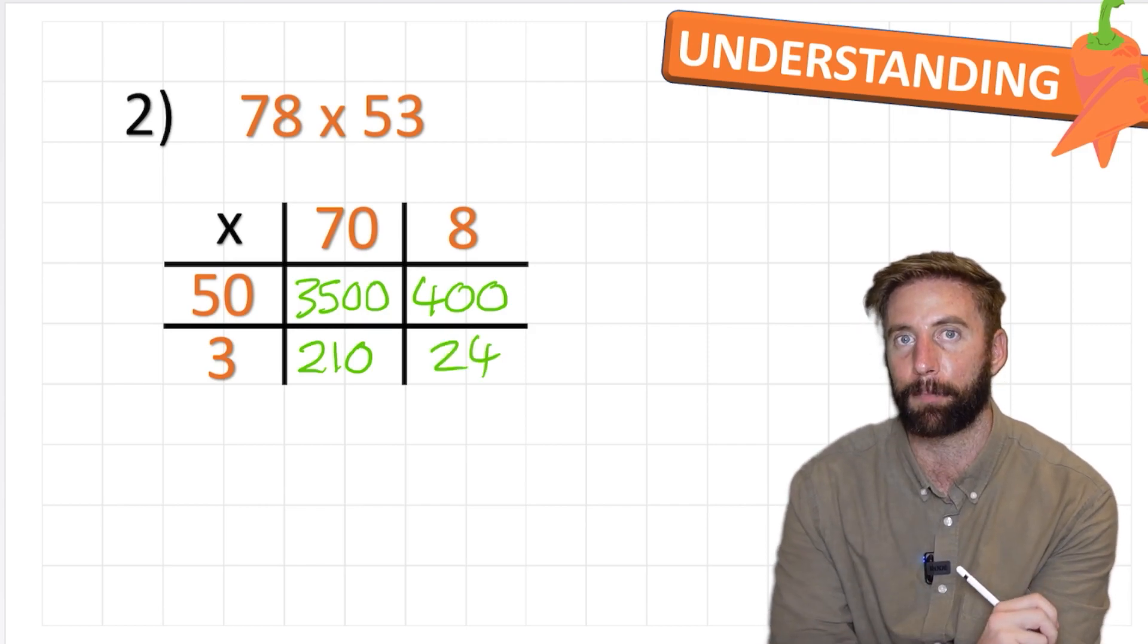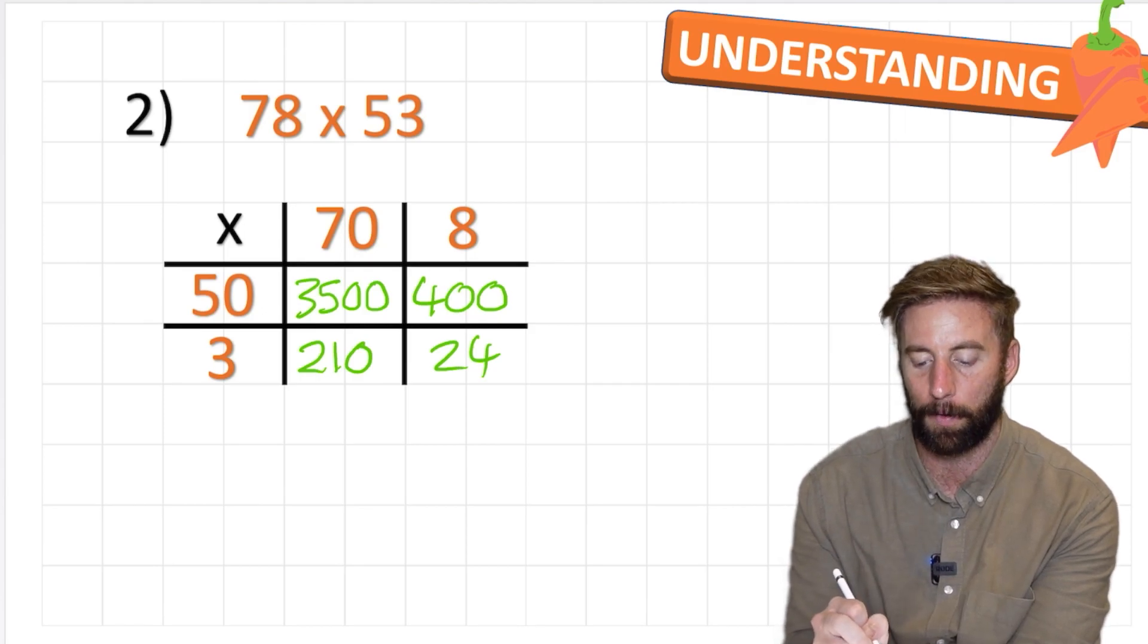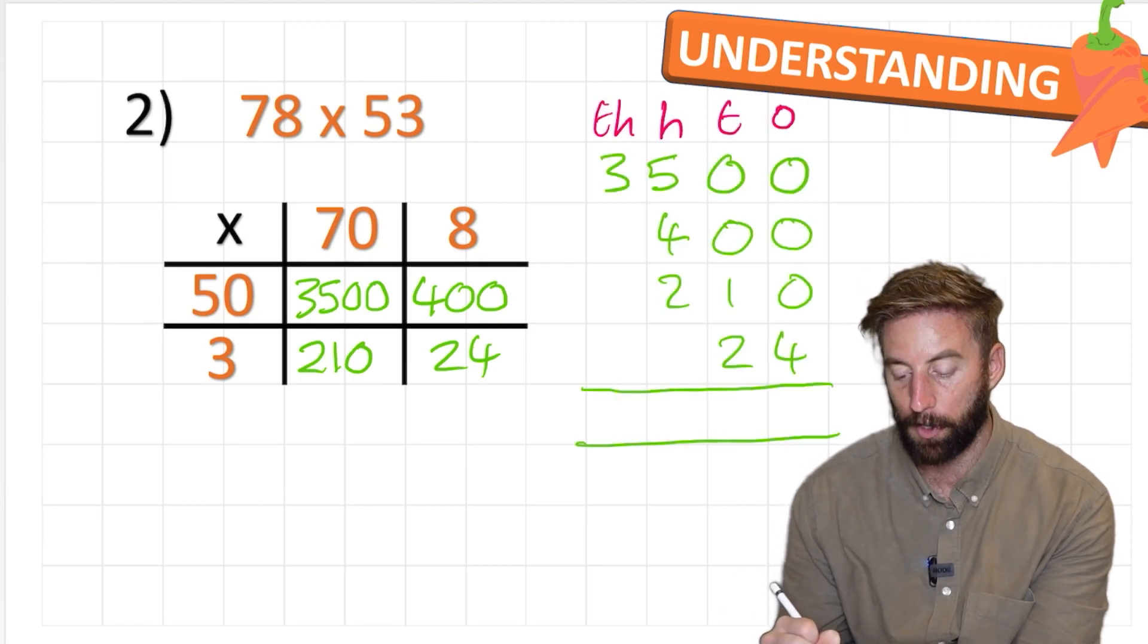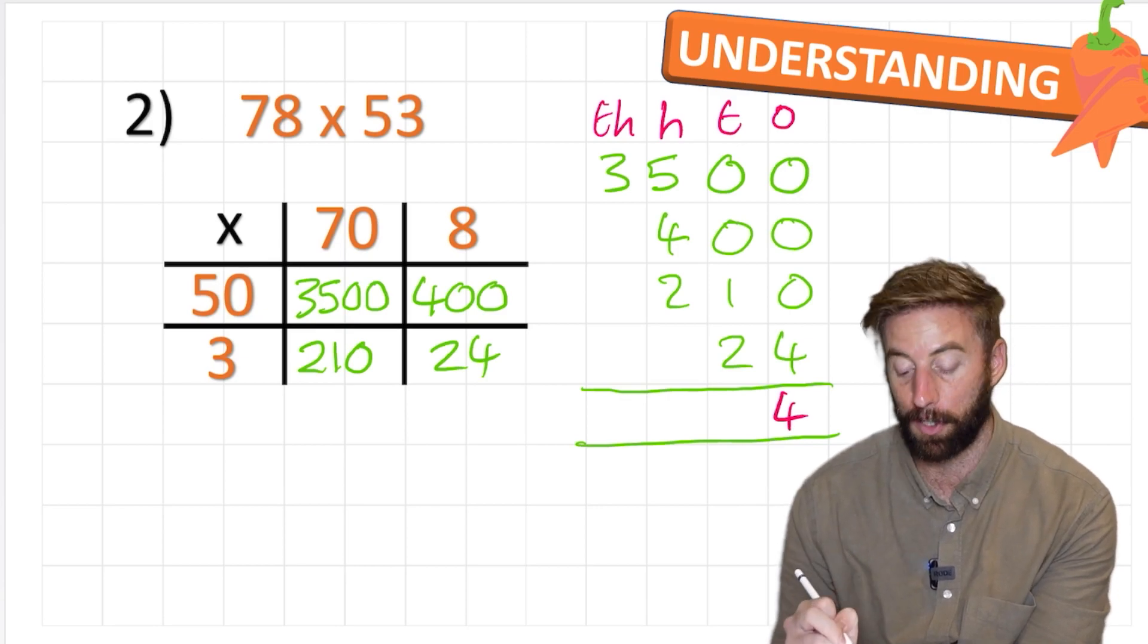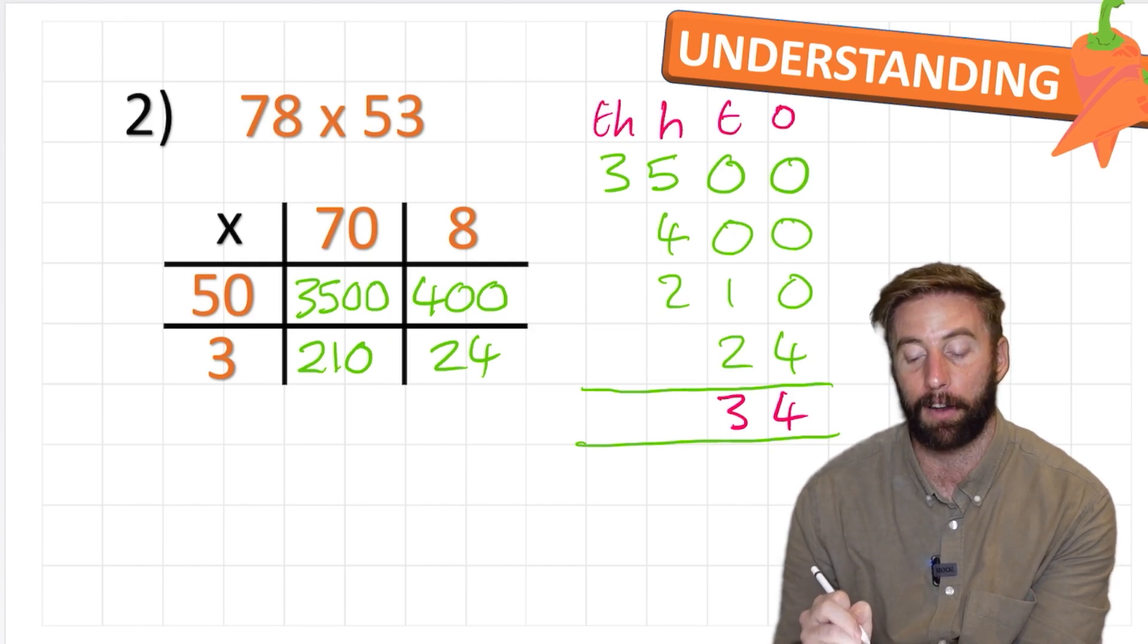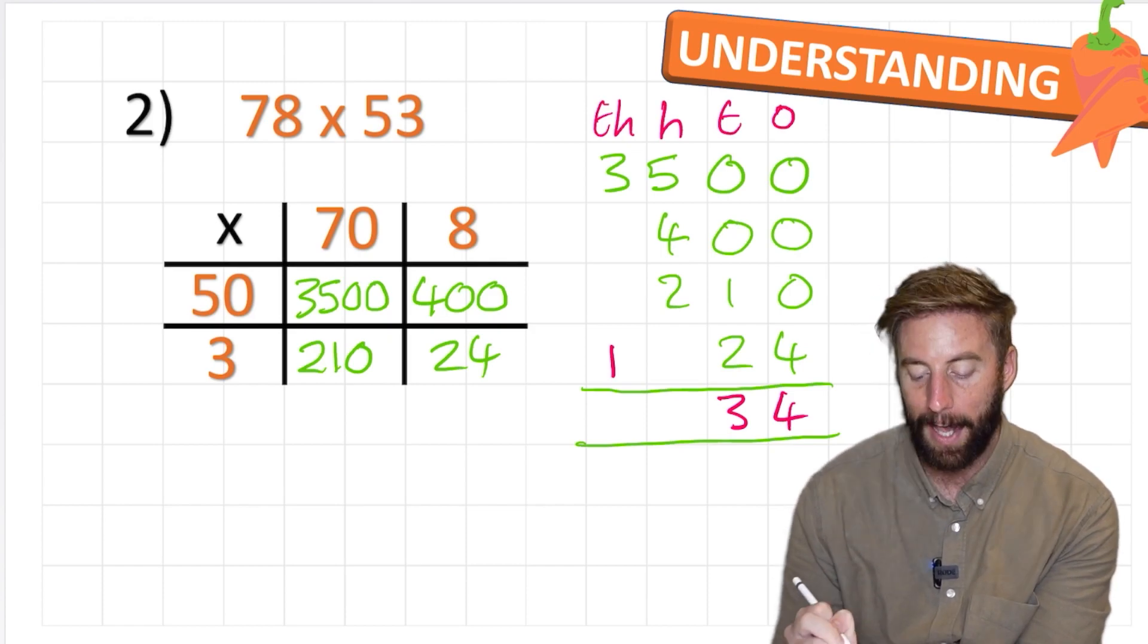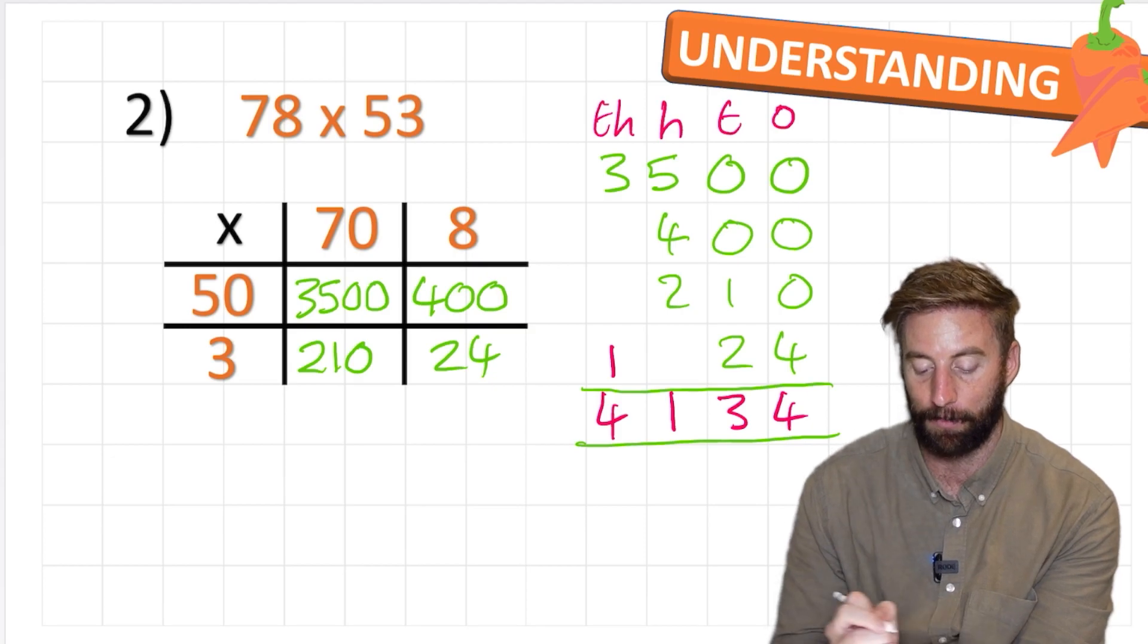Am I finished? Not yet because I partitioned but I've not added them back together. So let's add them back together. In my ones column I have 0, 0, 0 and 4 equals 4. In my tens I have 0, 0, 1 and 2 equals 3. In my hundreds I have 5 and 4 and 2 which is 11. And in my thousands I have 3 and my new 1: 4. So my answer is 4,134.